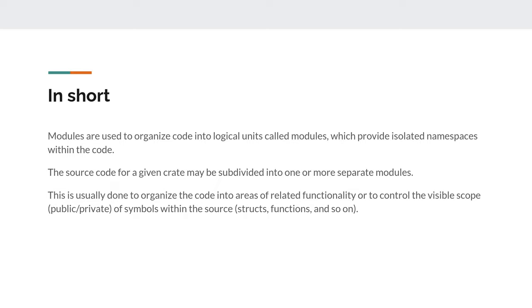Modules are usually used to organize related functionality. For example, if you're making a game you can have a rendering module, an audio module, and the crate which is the executable ties them all together. Structs, functions, and anything can be public or private in the context of a module.